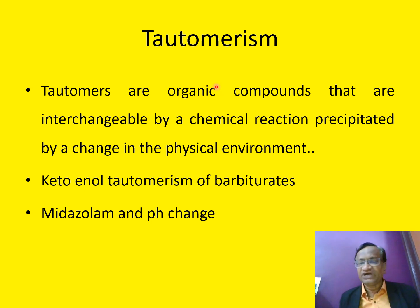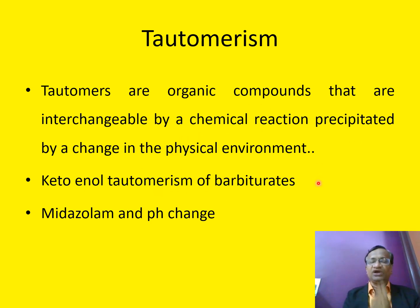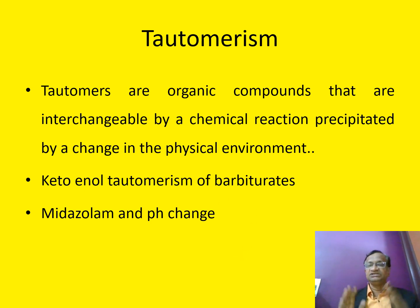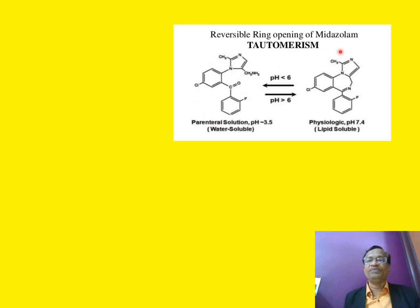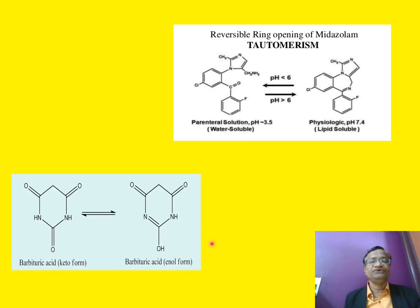Now we go to tautomerism, which is also a sort of structural or configurational isomerism. Tautomers are organic compounds that are interchangeable by a chemical reaction precipitated by a change of the physical environment. For example, midazolam has a different structure in the vial, but as soon as you give it, there is a change in the physical environment — it enters the blood and changes. This is called tautomerism. This is the reversible ring opening of midazolam: the open-ring form is water-soluble and the closed-ring form is lipid-soluble. As soon as it reaches a pH of more than 6 — around 7.3 in our body — the ring closes and it becomes more lipid-soluble. You can also see the keto form and enol form of barbituric acid as an example.